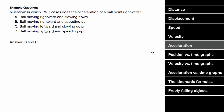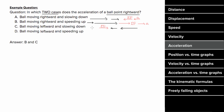What does an example problem for acceleration look like? Let's determine the two cases where the acceleration of this ball points to the right. If a ball is moving to the right and slowing down, the net force points left, so acceleration also points left. If a ball is moving to the right and speeding up, the net force points right, so acceleration also points right. If a ball is moving leftward and slowing down, the net force points right, so acceleration points right. If a ball is moving leftward and speeding up, the net force points left, so acceleration points left. So cases B and C are the two cases where acceleration points to the right.